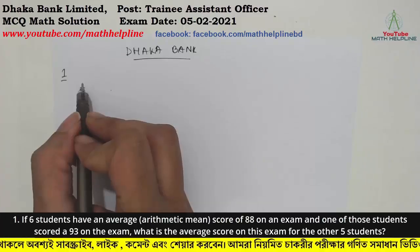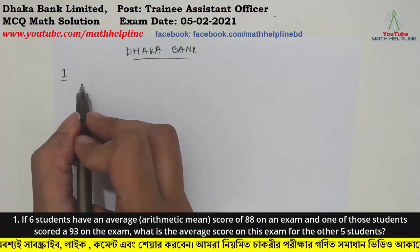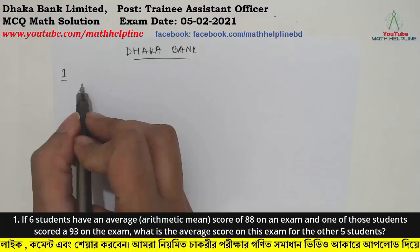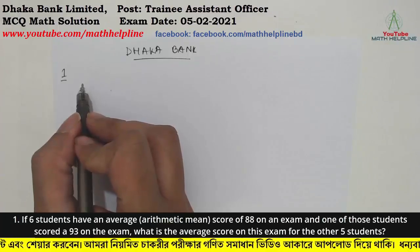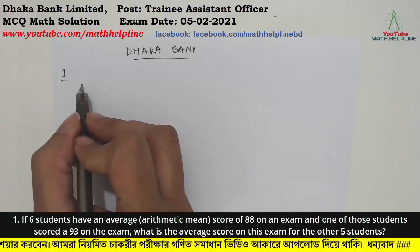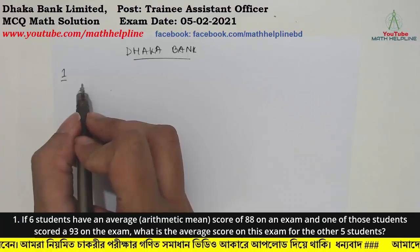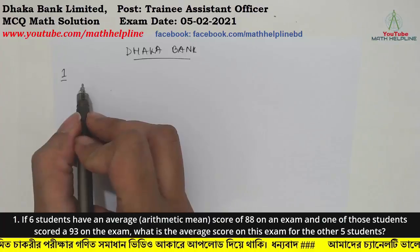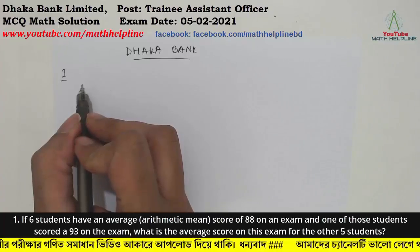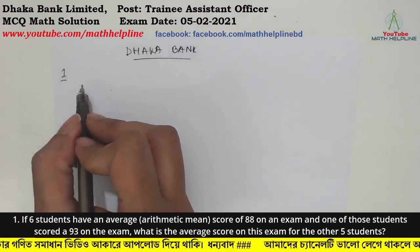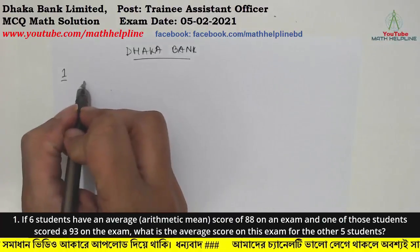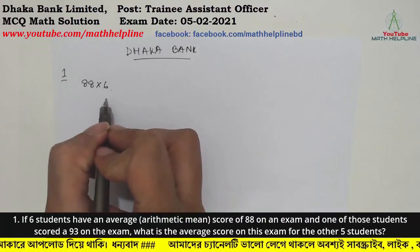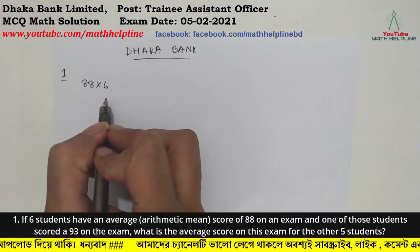Number 1: If six students have an average arithmetic mean score of 88 on an exam, and one of those students scored a 93 on the exam, what is the average score on the exam for the other five students? Six students have an average of 88, one scored 93, find the average of the remaining five.